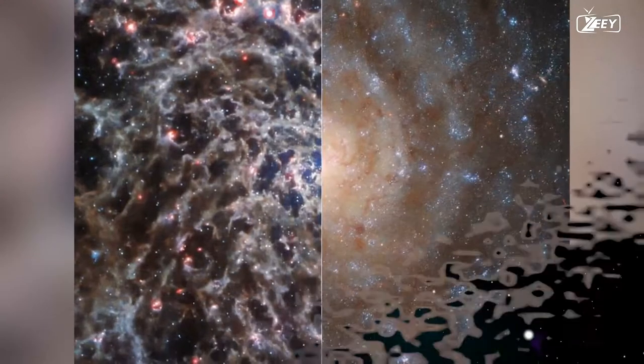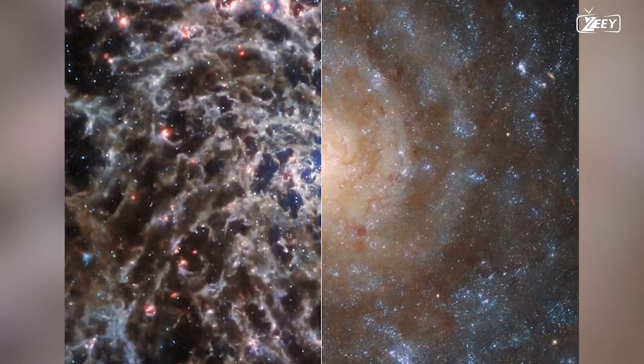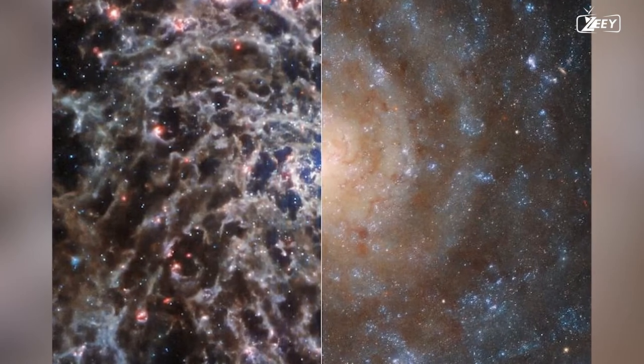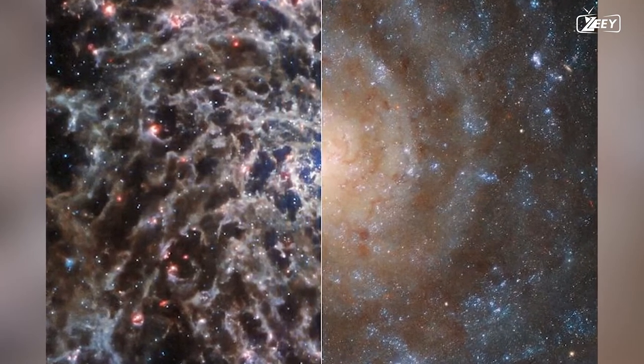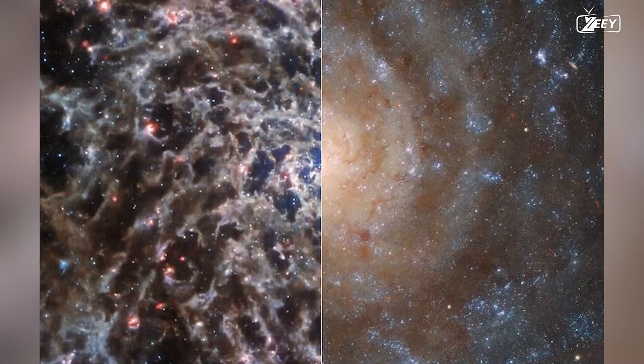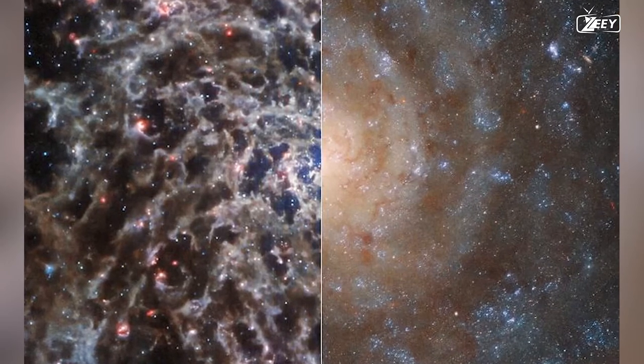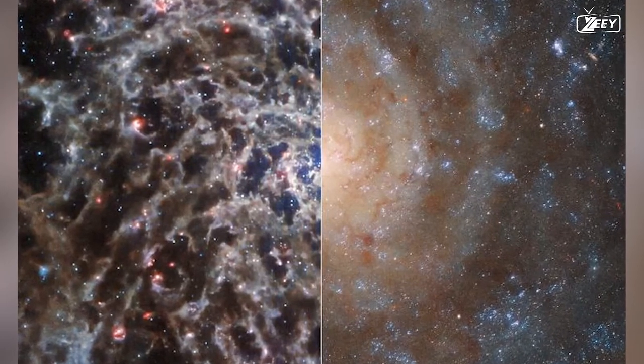Because some stars shine brighter in the ultraviolet, visible, and infrared spectrums, respectively, it is possible to see different stars in the two photos. Each image provides us with more information about the architecture and makeup of IC 5332, and they work in remarkable harmony together.